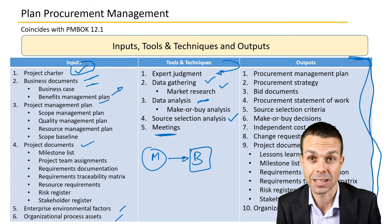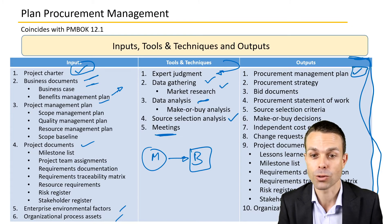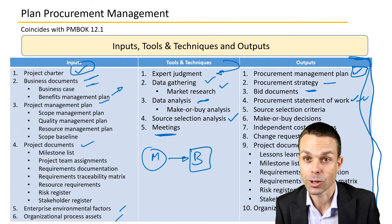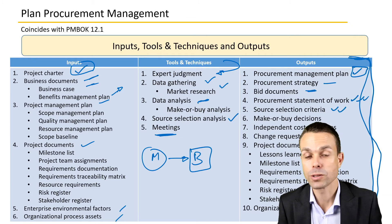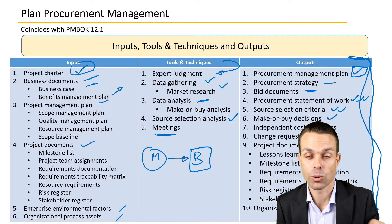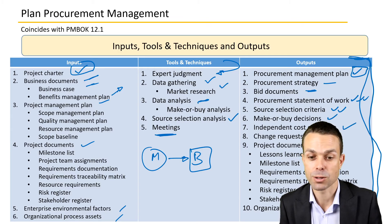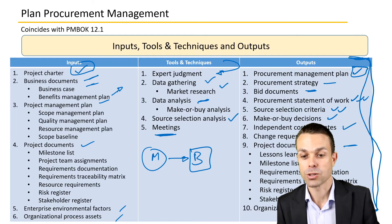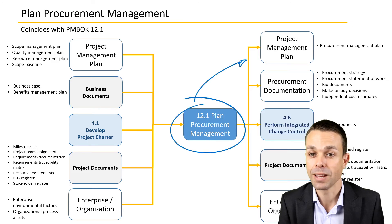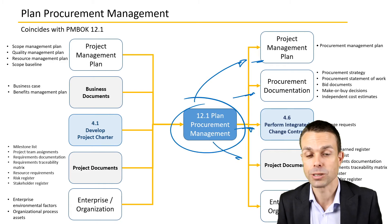There are a lot of outputs for planning procurement management, all related to contracts and sellers, making sure everything remains on track and is very clear. These include the procurement management plan itself, the procurement strategy, bid documents, the procurement statement of work describing what items will be delivered, source selection criteria, make or buy decisions, independent cost estimates, change requests, project documents updates, and organizational process assets updates. The plan procurement management also has input into the project management plan, procurement documentation, change control processes, and project documents.